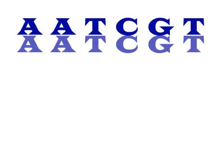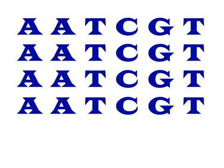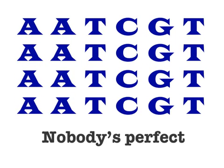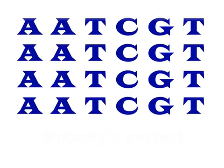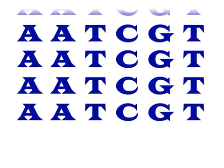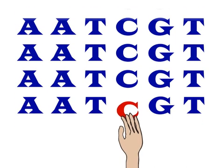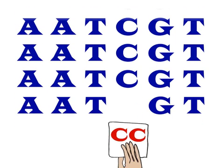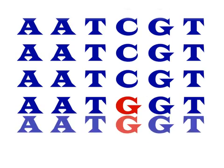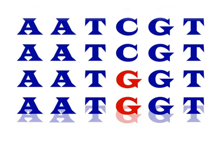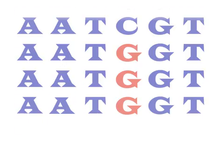When the body makes new cells, it doesn't make many mistakes. But nobody's perfect. Sometimes, when the genome is copied to make a new cell, a single base pair gets left out, added, or substituted. Single base pair substitutions create SNPs.